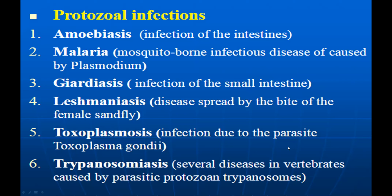In case of amoebiasis, they infect the intestine. Malaria is a mosquito-borne infection caused by Plasmodium. Giardiasis is an infection of your small intestine. Leishmaniasis is a disease spread by the bite of the female sandfly. Toxoplasmosis is an infection due to the parasite Toxoplasma gondii. And trypanosomiasis involves several diseases caused by the protozoan parasite Trypanosoma.